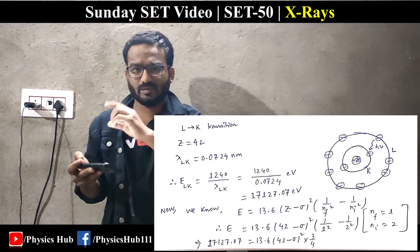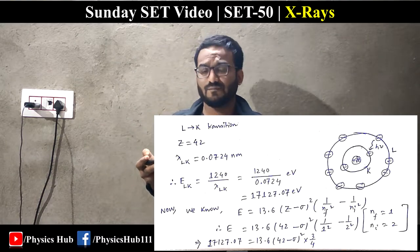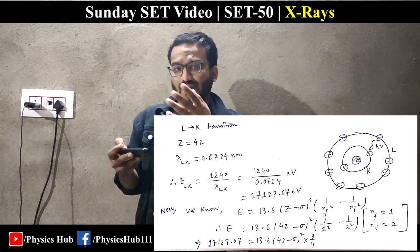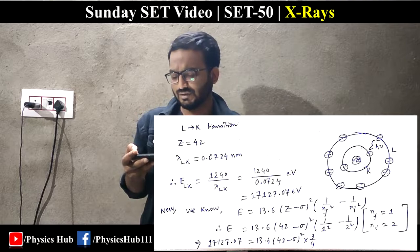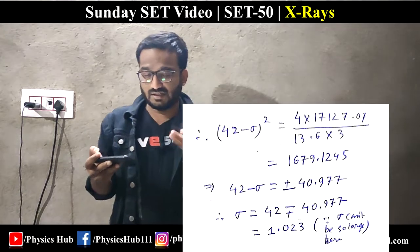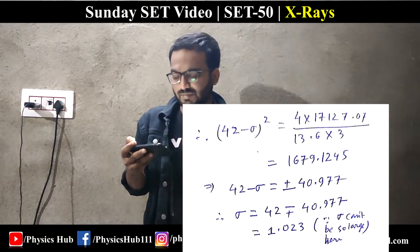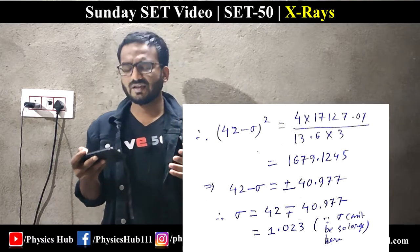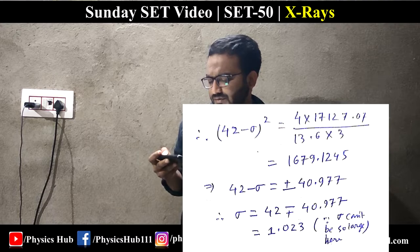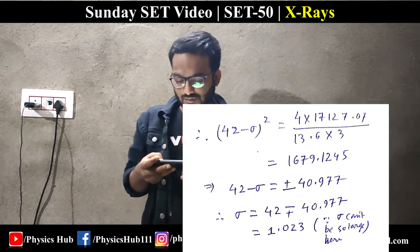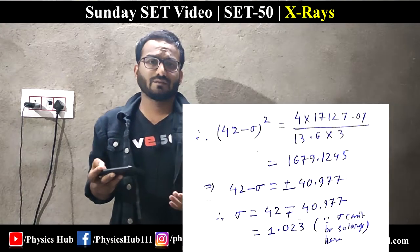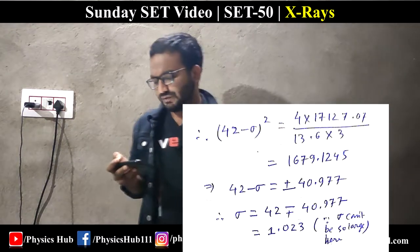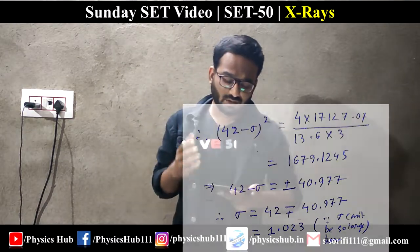The energy expression gives E = 13.6 (Z − σ)² [1/n_f² − 1/n_i²], with n_f = 1 and n_i = 2. Solving explicitly, we get σ ≈ 1.03. For K-shell electrons, this generally comes out to approximately 1. The other solution from the ± gives a value greater than 80, which is not physical, so we take σ = 1.03.